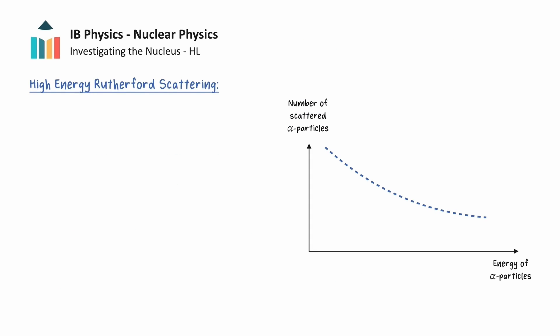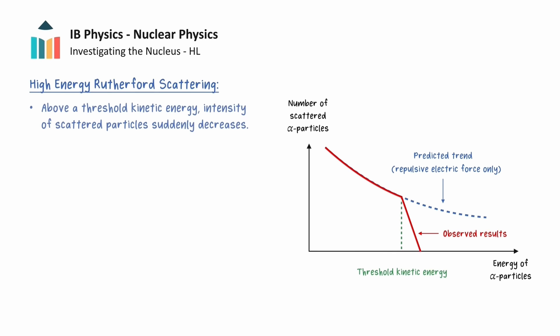From Rutherford's scattering model, it predicted the following trend for the number of alpha particles scattered at a given angle as a function of the alpha particle's energy. This was based on the assumption that the repulsive electric force is the only force that acts between the alpha particles and the nucleus. However, experimental results showed that above a threshold kinetic energy, the intensity of scattered particles suddenly decreases.